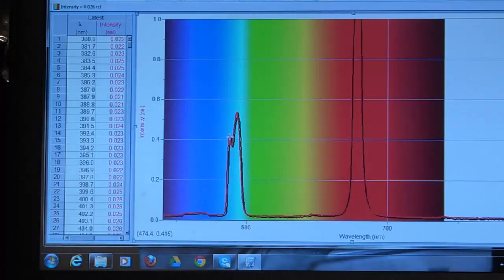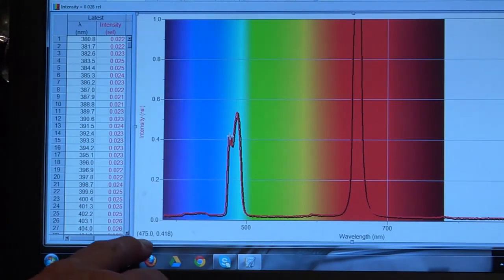So here you can see three very distinct peaks and that makes up the fingerprint for hydrogen. If we move our cursor right to this first peak, you can see that it's approximately at 475 nanometers.